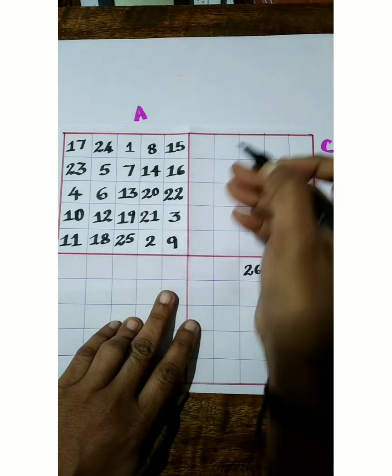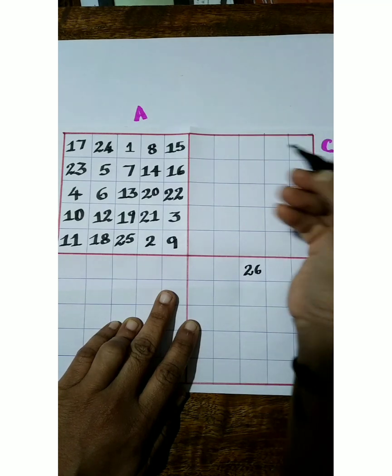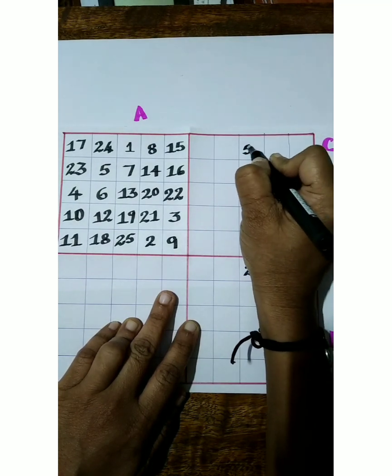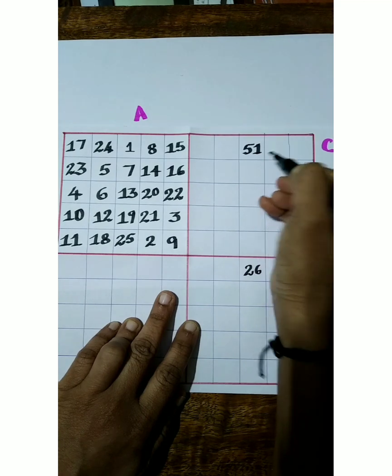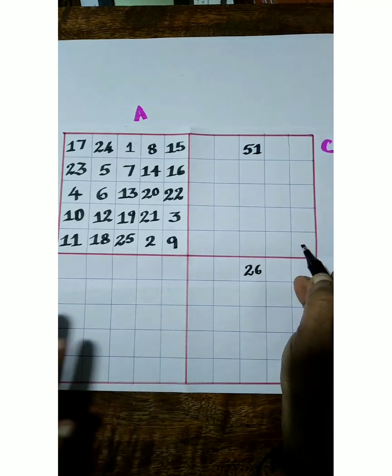After that, we are moving to box C, and let us start from here 51. And similarly, here last number is 75.